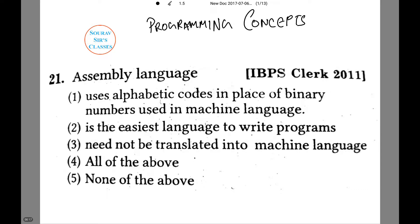What is the feature of an assembly language? These are the four options. It uses alphabetic codes in place of binary numbers used in machine language, which is the correct answer.